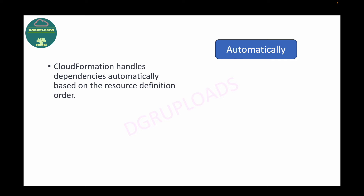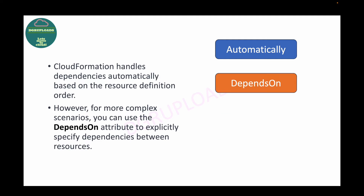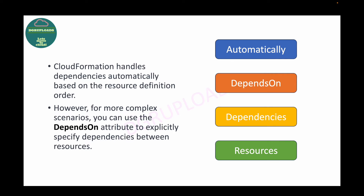However, if you want to explicitly manage dependencies, you can use the DependsOn attribute in your CloudFormation template. For more complex scenarios, using DependsOn you can specify dependencies between resources — for example, ensuring an S3 bucket or IAM resources are created first. That's how you can control the order of resource creation.